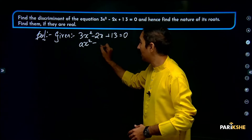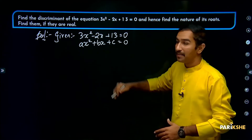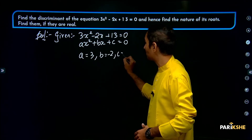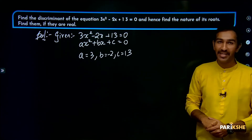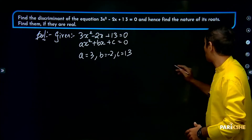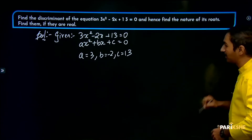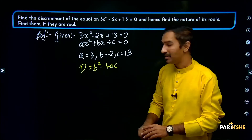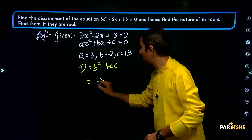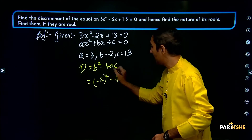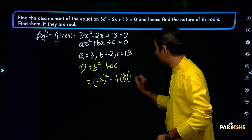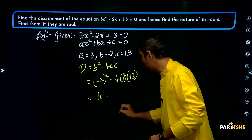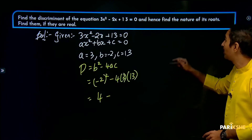By comparison, we get A is equal to 3, B is equal to minus 2, C is equal to 13. Now we find the discriminant D equal to B square minus 4ac.